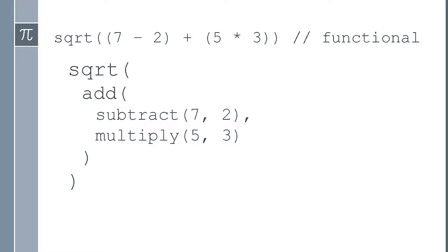Let's look at that same mathematical expression from a functional perspective: a subtract function takes arguments 7 and 2 and gives 5; a multiply function takes 5 and 3. Those results get passed to an add function, and then that result gets passed to the square root function. It's functions all the way down — we're thinking of everything as functions.